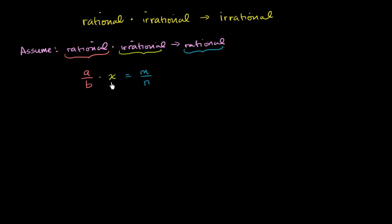Let's solve for the irrational number. The best way to solve is to multiply both sides times the reciprocal of this number right over here. So this is multiplied times b over a. And what are we left with?